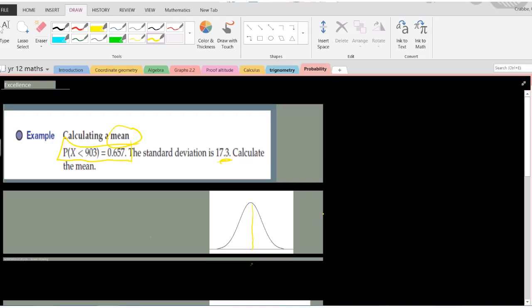If we draw this, we can start by drawing it like we would normal. The problem is we don't know what the mean is. But if the probability that x is less than 903 is 0.657 or 65.7 percent, if this is 903, then basically we're looking at all of this area over here.